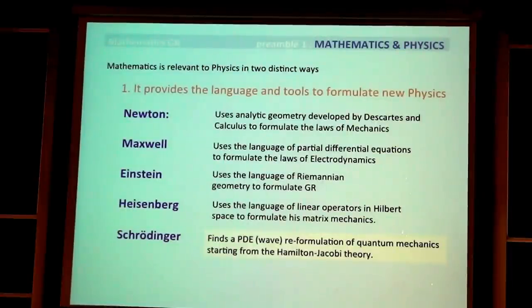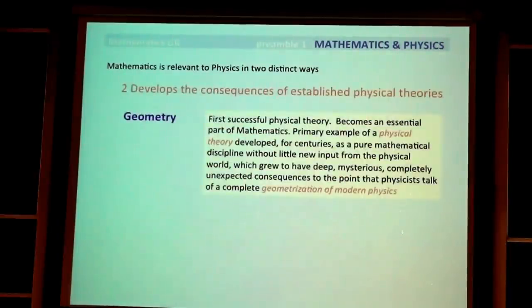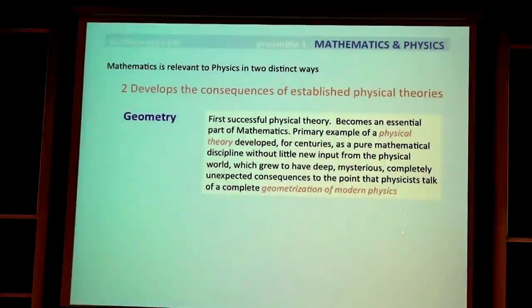You can see there are many examples in modern times — I can go on and on, but these are maybe the most fundamental ones. There is another way in which mathematics is relevant to physics, and that's by developing the consequences of established physical theories.